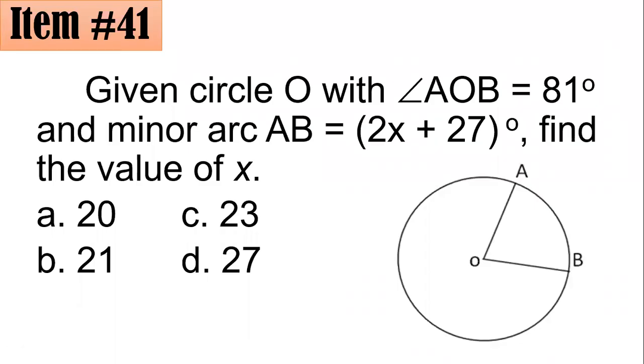Moving on to item number 41. Given circle O with angle AOB of 81 degrees and minor arc AB of 2x plus 27 degrees, find the value of x. The choices are 20, 21, 23, or 27.